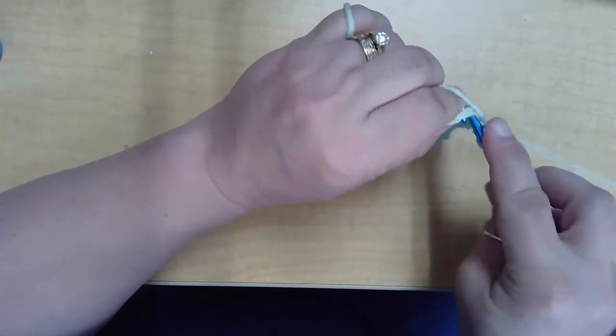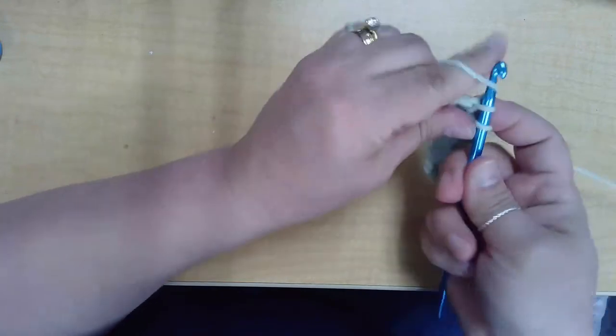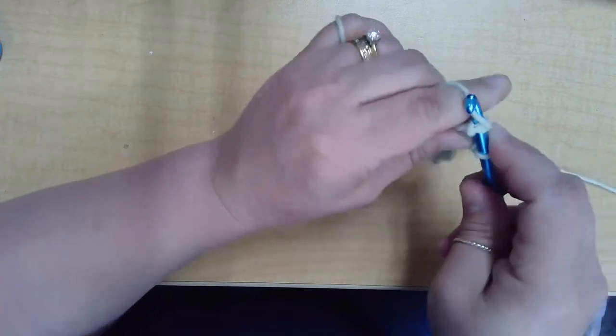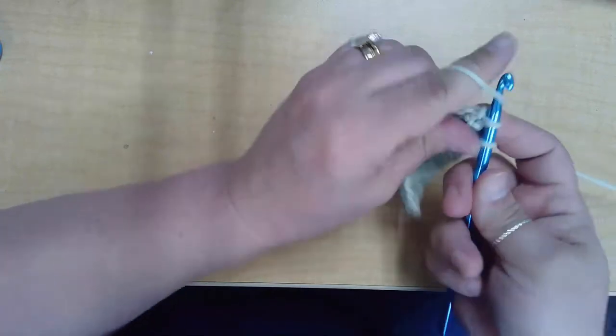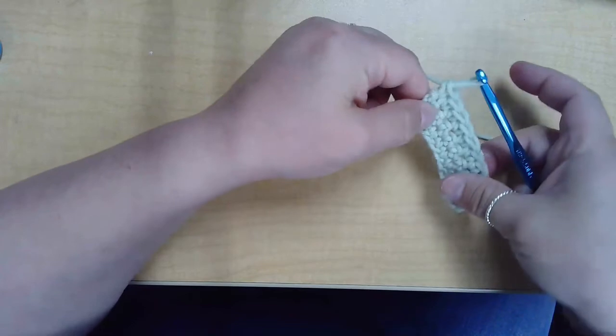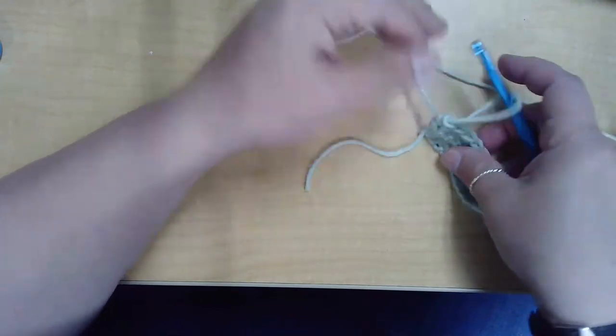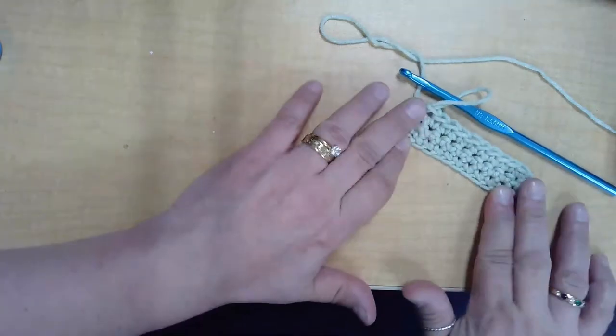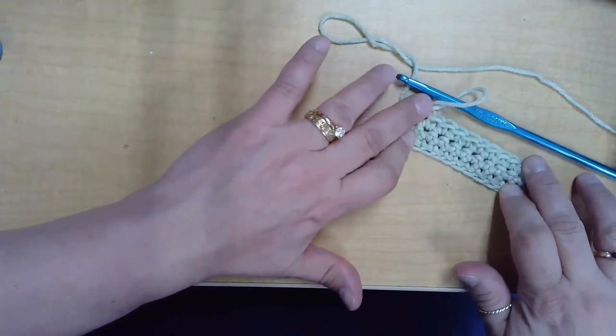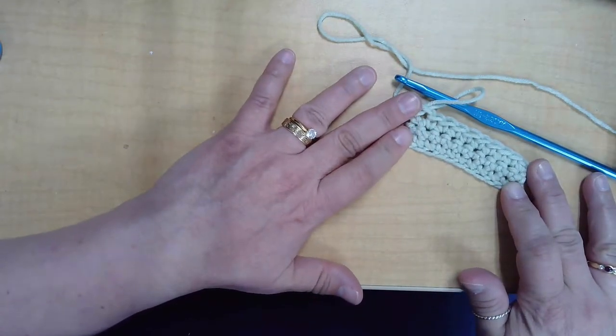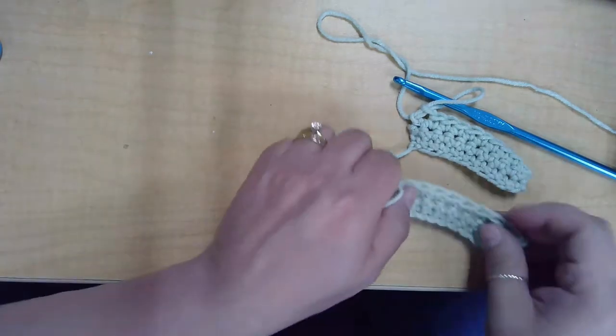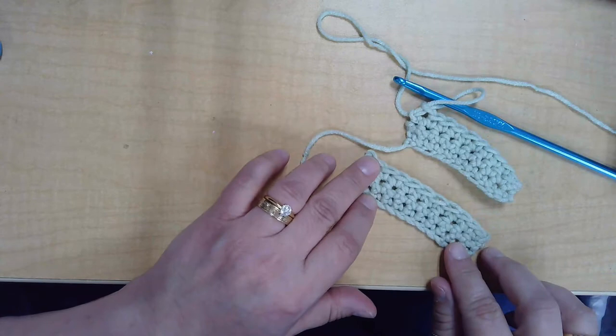And this is the same whether you're working in a straight line with rows, like for a scarf or a blanket, or if you are working in the round. And there we have our swatch. And you can see it's nice and even. Sometimes they'll curl up until you block it later on with some water. But there is a basic single crochet swatch.